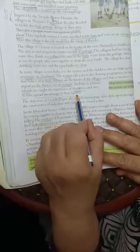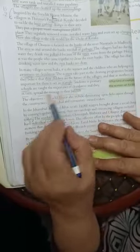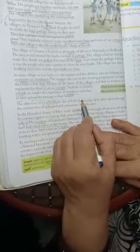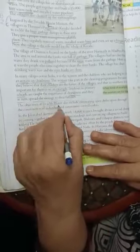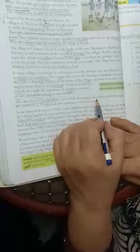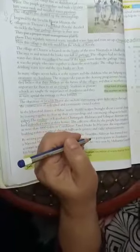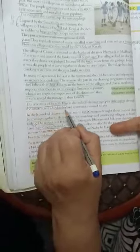The objectives of Swachh Bharat also include eliminating - means removing - open defecation. Open defecation means open latrines, excretion waste, through the construction of individual and community-owned toilets.